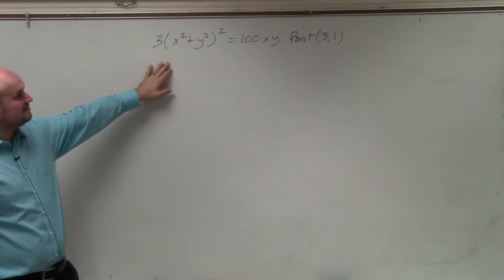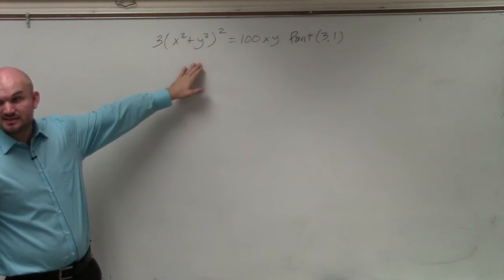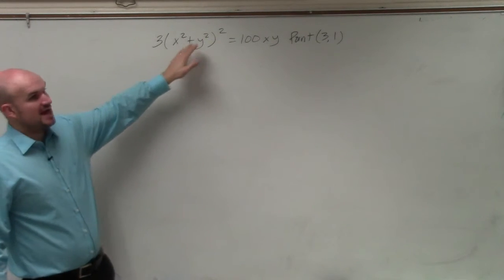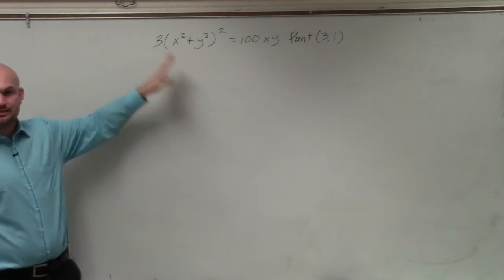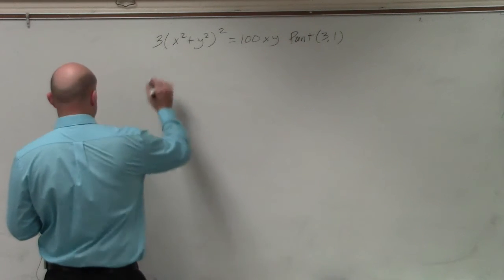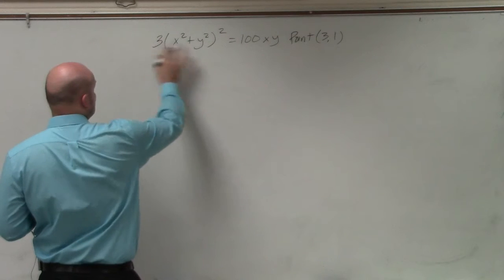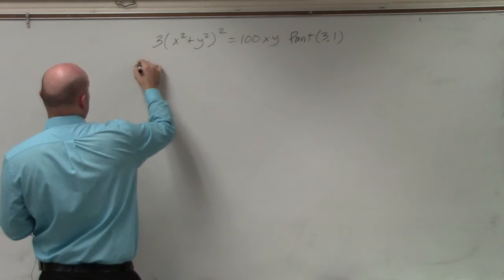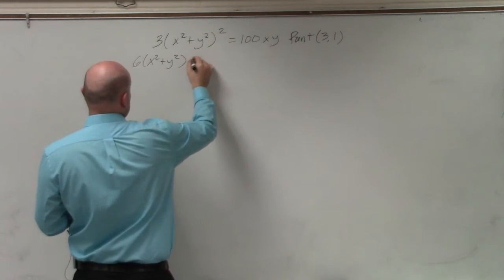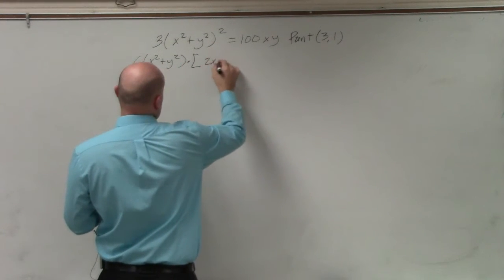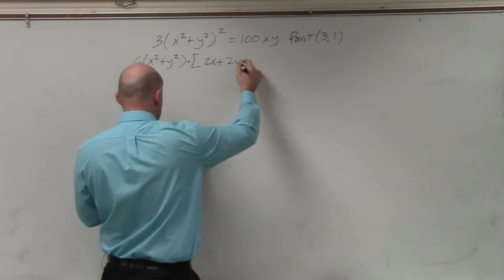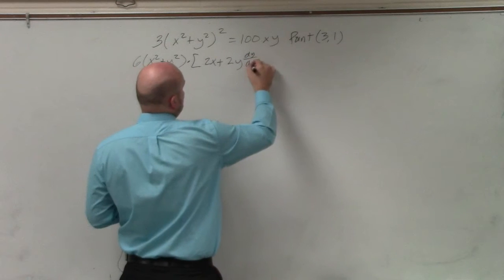By taking dy/dx on both sides, we instantly see that this is a chain rule. The inside function is x² + y², and the outside function is x squared. This constant can just be taken out. So when I go ahead and take dy/dx of both sides, I end up getting 6 times (x² + y²) times (2x + 2y), which is just taking the derivative of the inside with dy/dx.